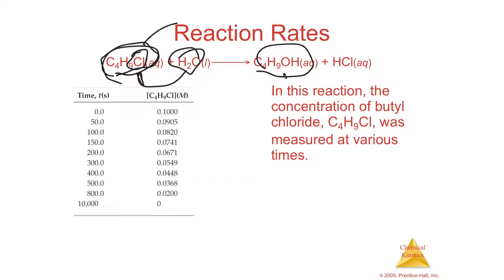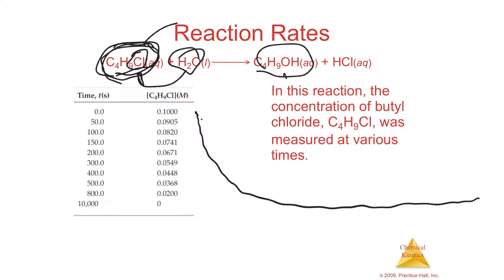They took the concentration of butyl chloride at the beginning — 0.1 molar. Remember, concentration is moles of solute divided by liters of solution. Then readings were taken at 50 seconds, 100 seconds, 150 seconds, all the way up to 10,000 seconds. You started at 0.1 and ended up at 0 — going away slowly.